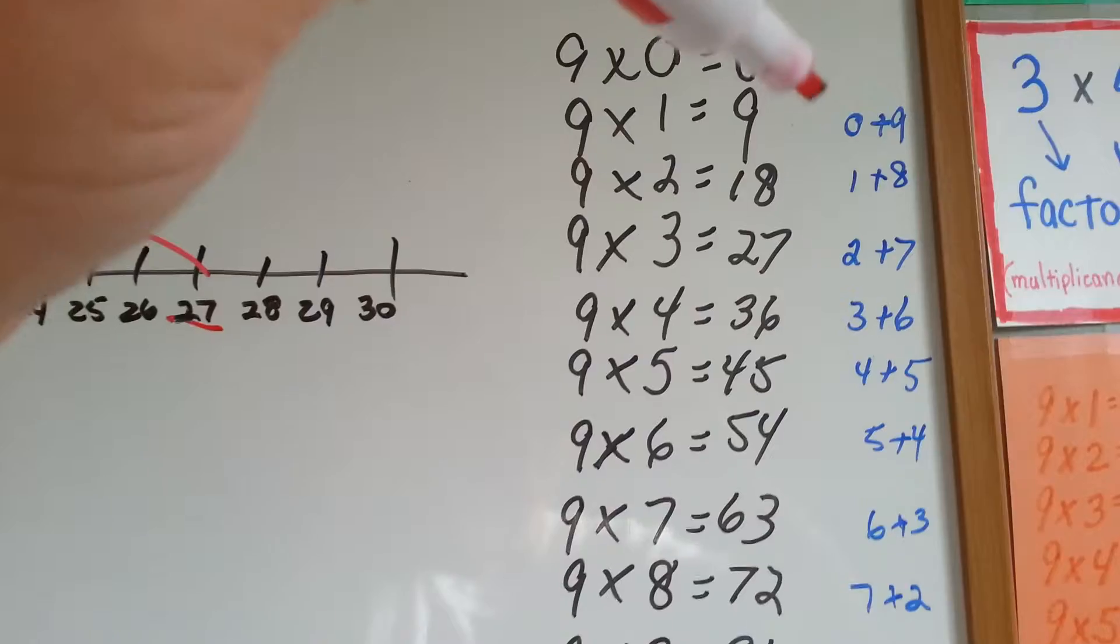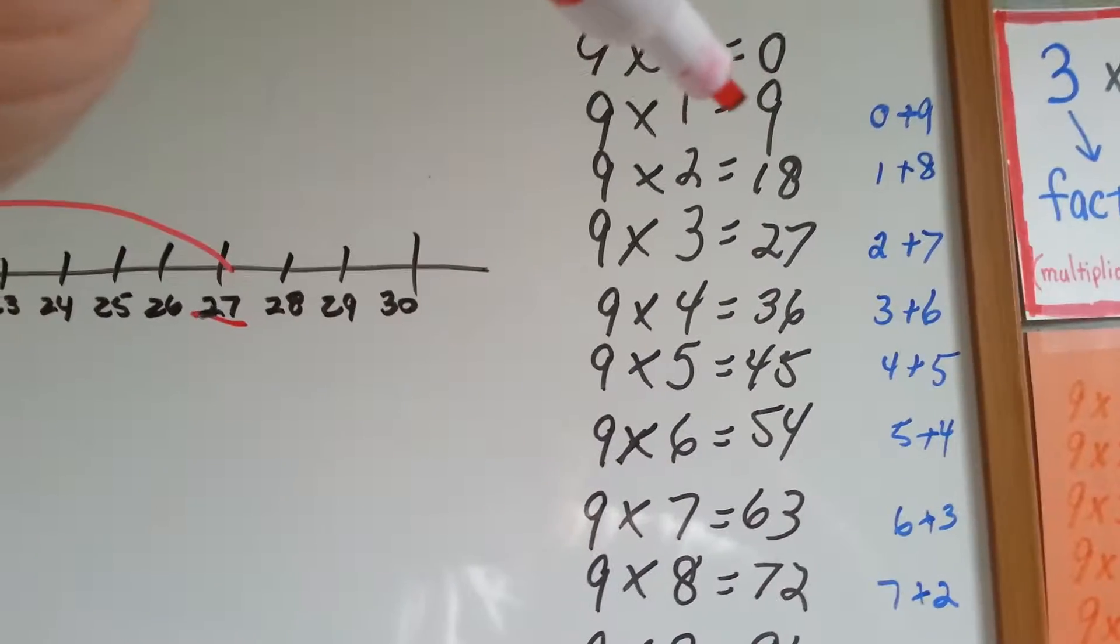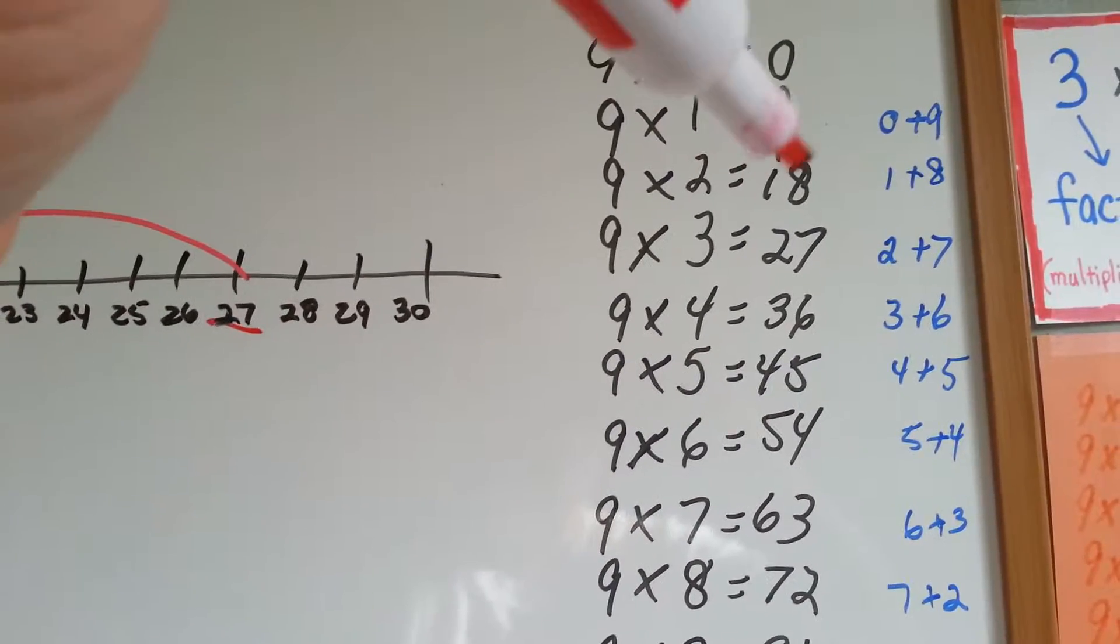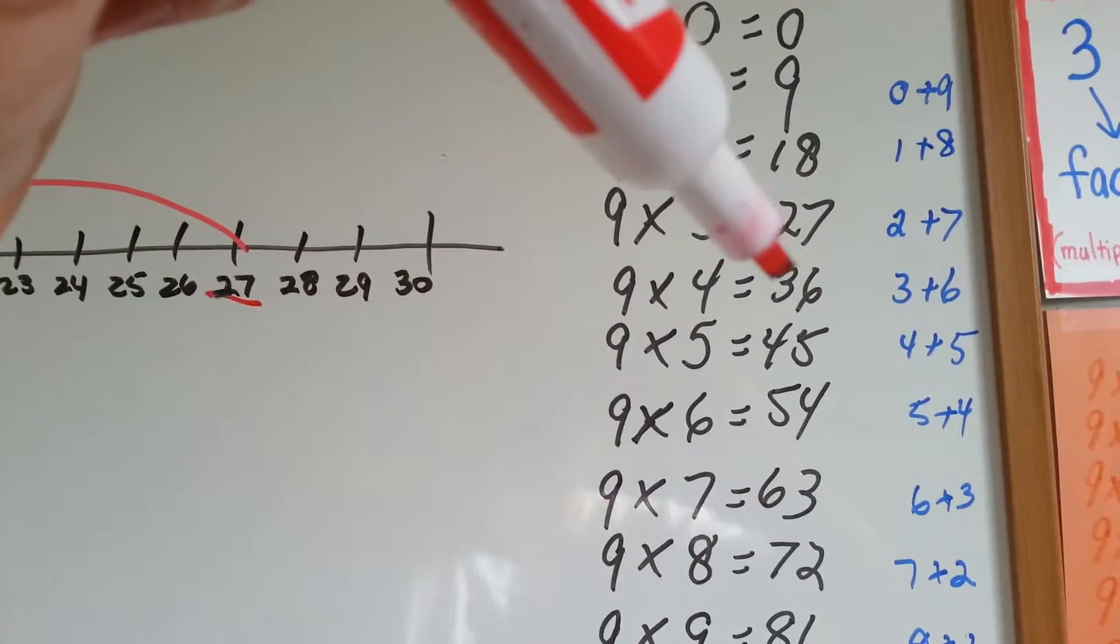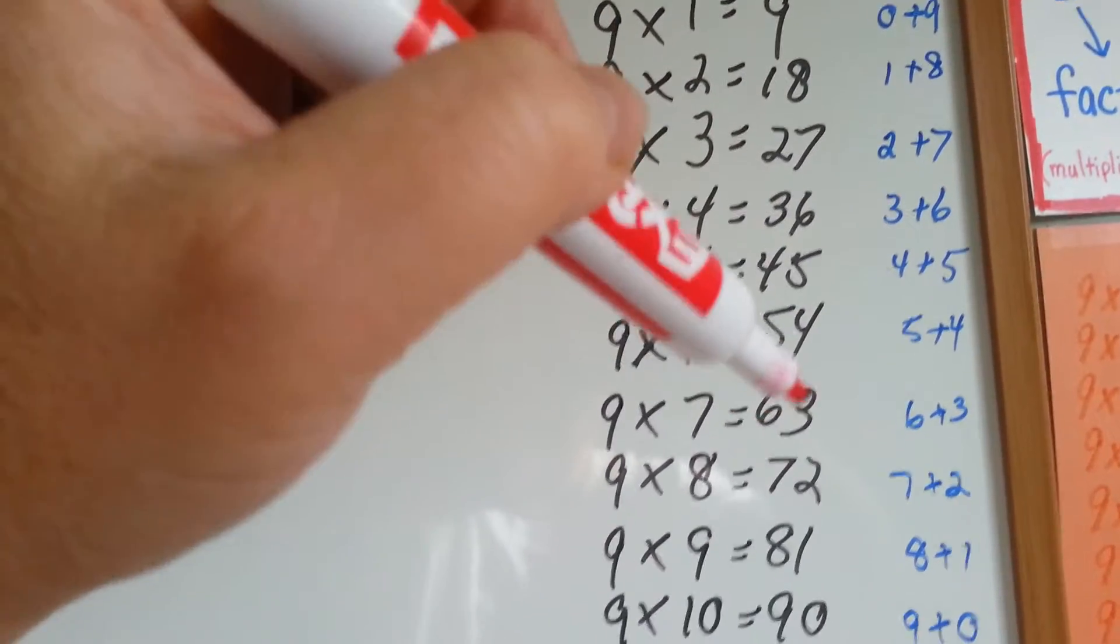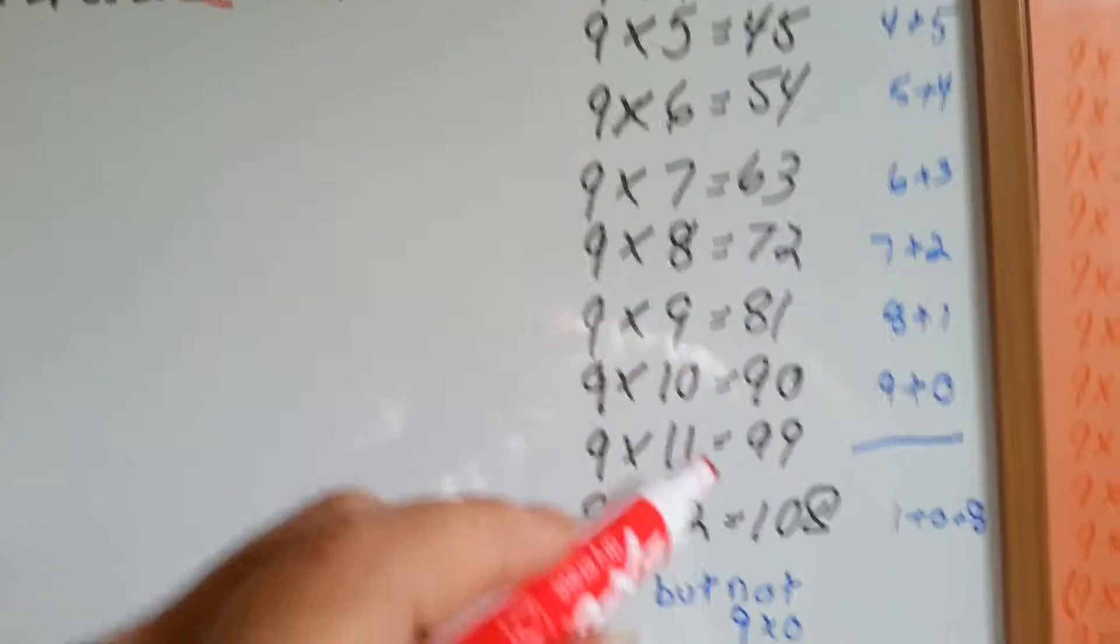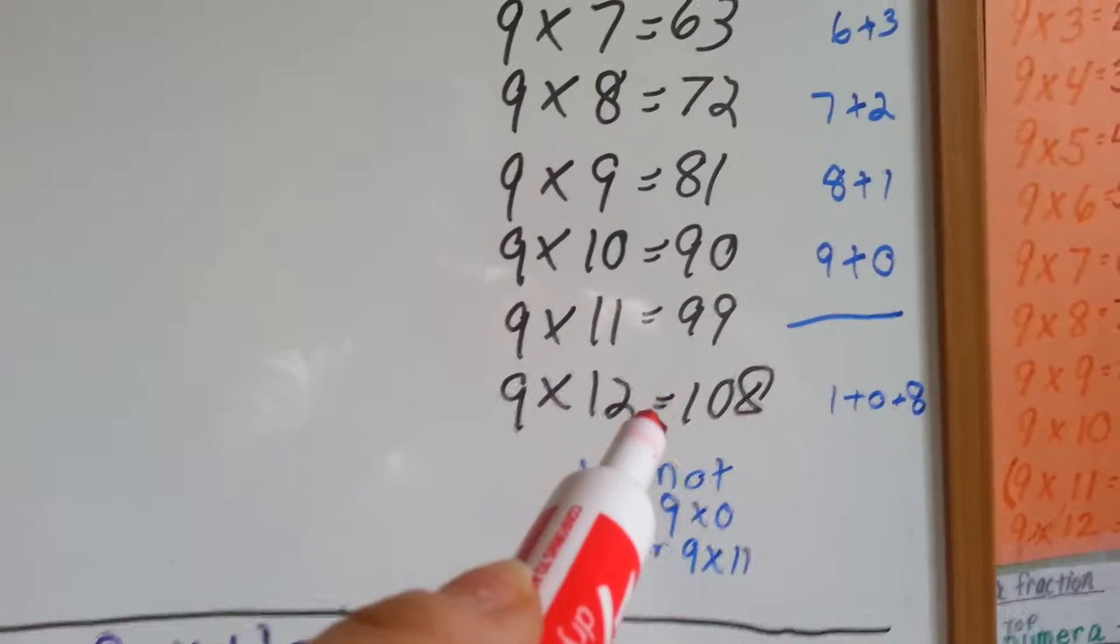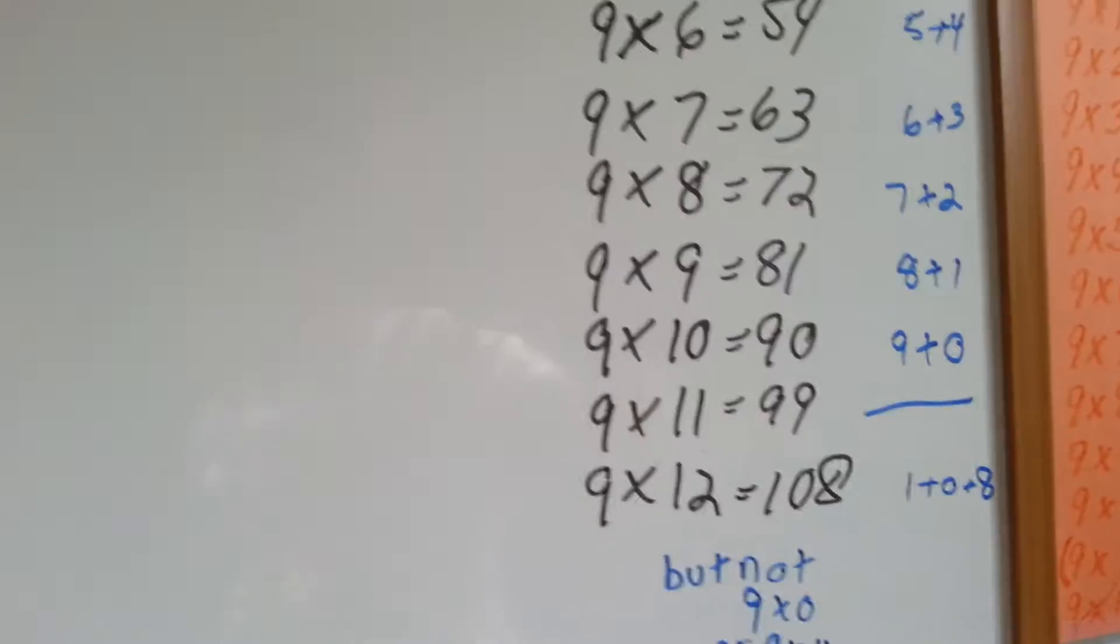The answers to the 9 times table equal 9 when you add the first and second digit together. Imagine there's a 0 in front of this 9, so it would be 0 plus 9 equals 9. 18 is a 1 and an 8. 1 plus 8 equals 9. 2 plus 7 equals 9. 3 plus 6. 4 plus 5. 5 plus 4. 6 plus 3. 7 plus 2. 8 plus 1. 9 plus 0. Now it doesn't work for 9 times 11 or 9 times 0. But even 9 times 12, which is 108, is 1 plus 0 plus 8, that equals 9. Isn't that kind of a neat trick?